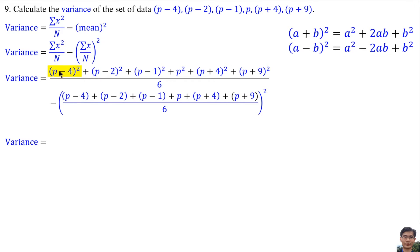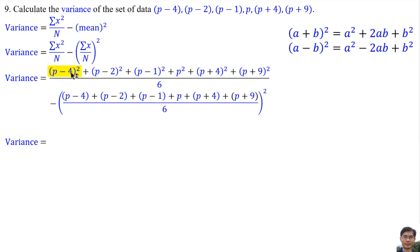(P minus 4) squared: according to this formula, A is P and B is 4. So (P minus 4) squared equals P squared, minus 2 times P times 4, which is negative 8P, plus 4 squared.